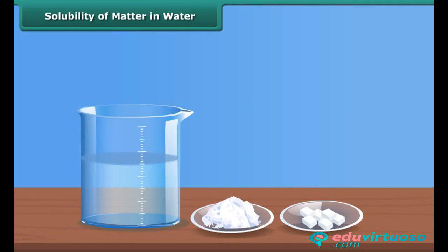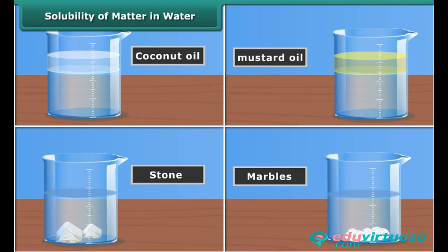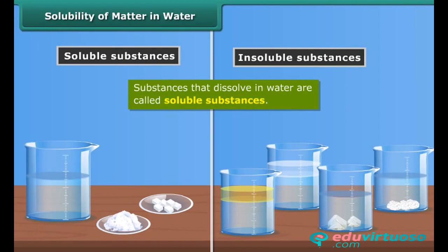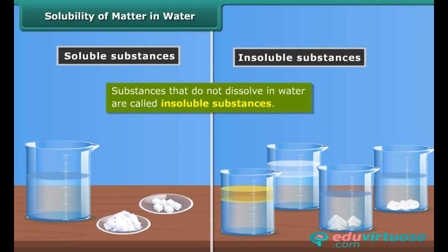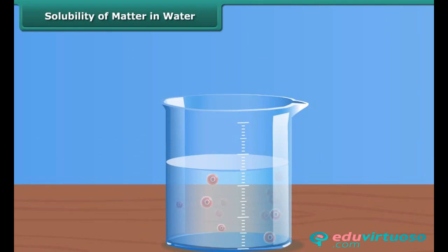She also notices that some substances do not dissolve in water, such as coconut oil, mustard oil, stone, marbles, etc. Substances that dissolve easily in water are called soluble substances. Substances that do not dissolve in water are called insoluble substances. Some gases are also soluble in water, such as oxygen. Oxygen dissolved in water helps aquatic animals survive.